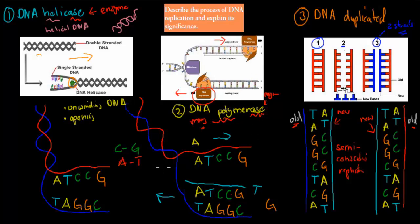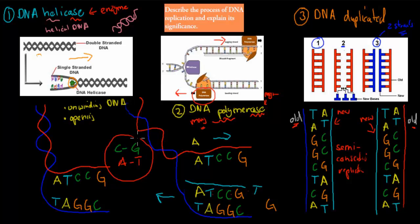Those nucleotides are floating around the nucleus, not really doing anything. The polymerase grabs them and makes an identical copy — C will always bind with G, and A always binds with T. So it knows what to attach based on those complementary base pairing principles, and one polymerase will go in the direction of helicase.